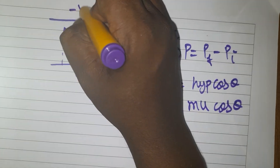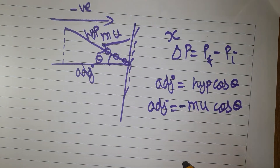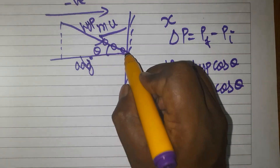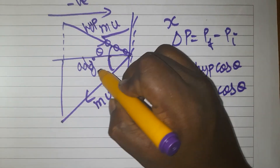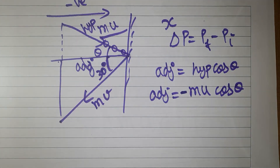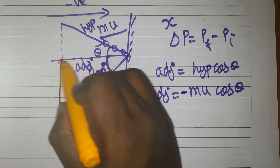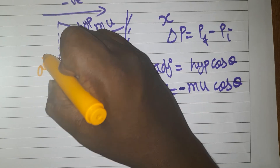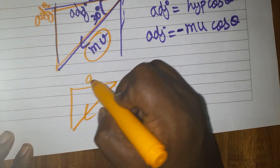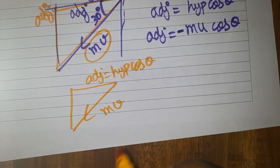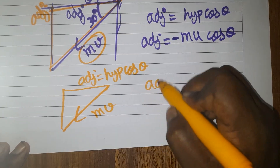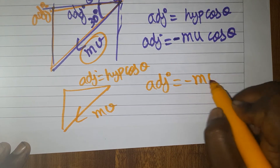Initially, we take the x-component of initial velocity as negative — that is the side going toward the wall. When the ball goes back, for the second triangle (the bounce-back), the adjacent side is also at 30 degrees. The hypotenuse is M×V, and since U and V are the same, the x-component of final momentum is M×U×cos θ, taken as positive.